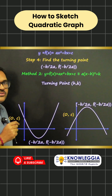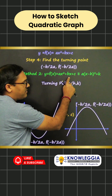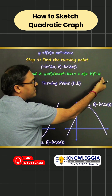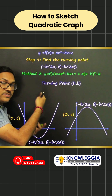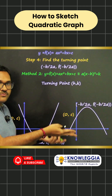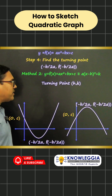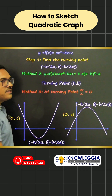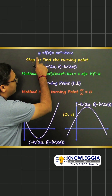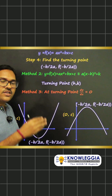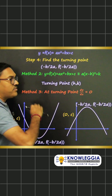Another way to find the turning point is by completing the square. If you rewrite the function as a(x − h)² + k, then (h, k) is the turning point. This is also a common exam question. Alternatively, at the turning point dy/dx = 0, so you can differentiate the function and set it equal to zero to find the x-coordinate.